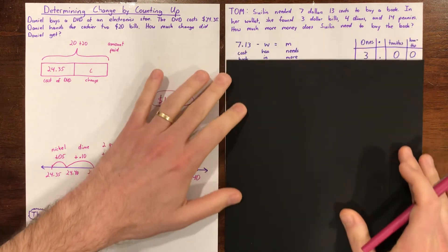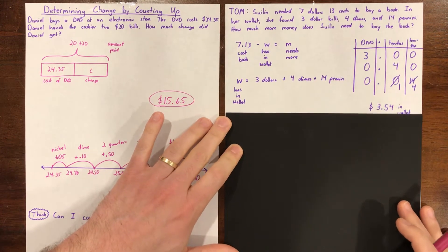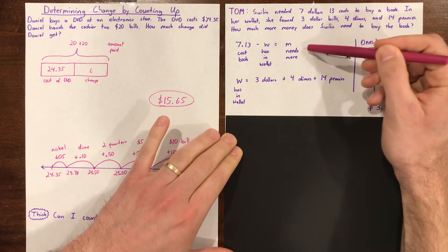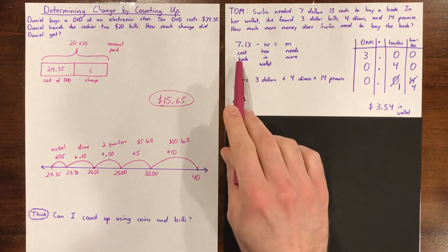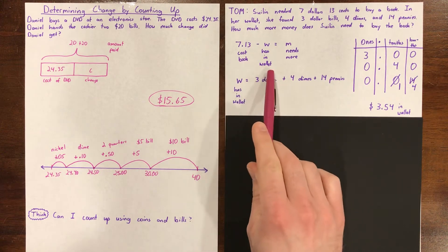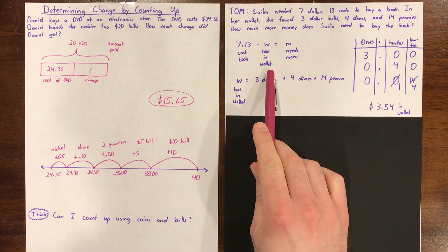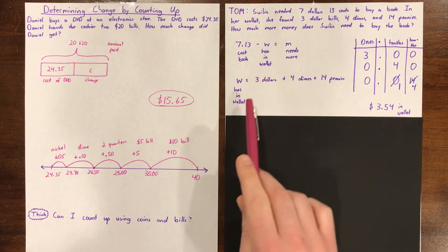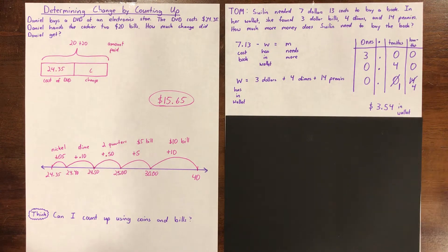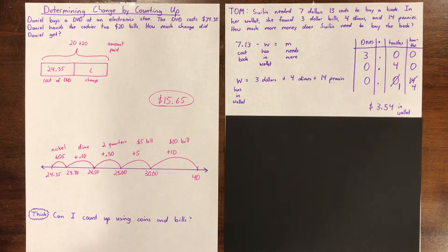We need two parts in our representation. Our big question here is how much more money does Sulin need in order to buy the book she's trying to buy? But in order to figure that out, we have to know how much money Sulin actually has in her wallet — that's the little question we have to answer first. We know from yesterday that we can use a place value chart to help us determine the value of coins and bills. I've done this already, and we find there's $3.54 in her wallet.